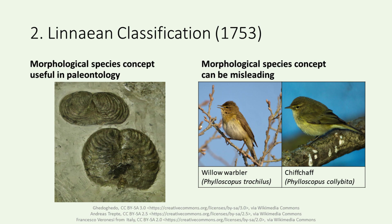The morphological species concept is particularly useful in the field of paleontology. However, it can be misleading, as evidenced by the willow warbler and chiffchaff, which have very similar physical traits but do not interbreed. By categorizing organisms based on shared physical traits, Linnaeus sought to reflect their evolutionary relationships, using the knowledge and tools available at his time. As we transition to subsequent slides, it's crucial to recognize that while taxonomy began with morphology, it has evolved dramatically. Today, with the integration of genetics, molecular biology, and advanced computational methods, taxonomy offers insights into the intricate evolutionary relationships among organisms, reshaping our understanding of life's interconnected web.